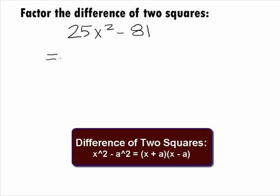Rewriting our binomial to show you how it fits this form, we can rewrite 25x squared as a base of 5x being squared and 81 as a base of 9 being squared.